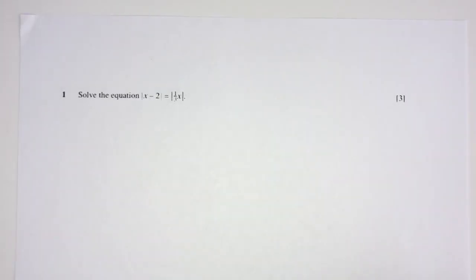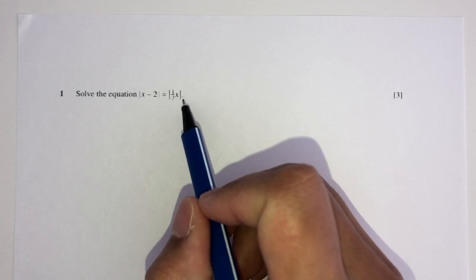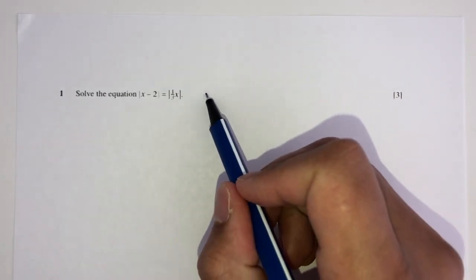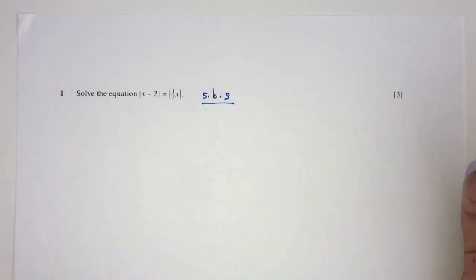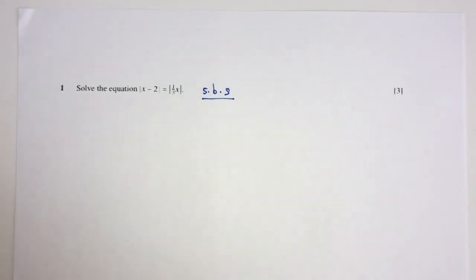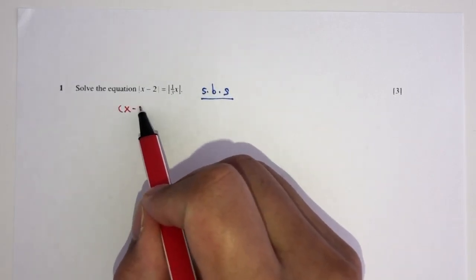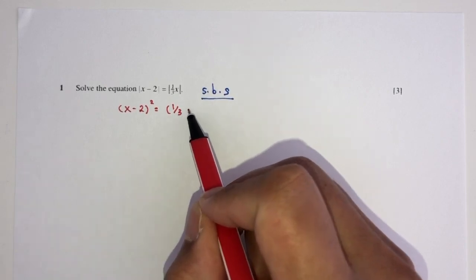So here we have question number one. Solving the equation means finding the value of x. Now, we have modulus on both sides and we have x on both sides. So in this case, we have to square both sides. There are obviously other ways of solving this by sketching graphs, but you don't want to waste your time doing that. So squaring both sides, you will have (x minus 2) squared is equal to (1 over 3x) squared.